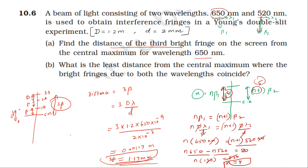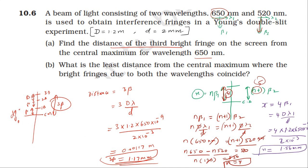The coincidence distance is 4 × β₁ = 4 × Dλ₁/d. Substituting: 4 × 1.2 × 650 × 10⁻⁹ / (2 × 10⁻³). Calculating gives 1.56 millimeter. So the least distance from the central maximum where bright fringes of both wavelengths coincide is 1.56 millimeter.